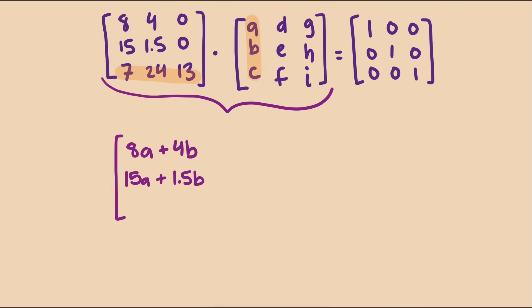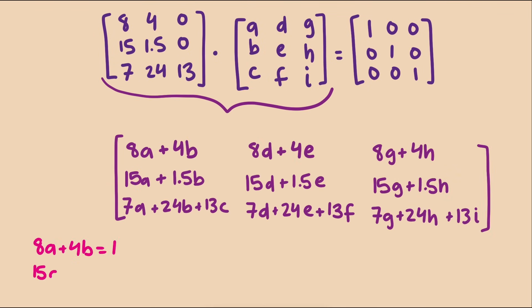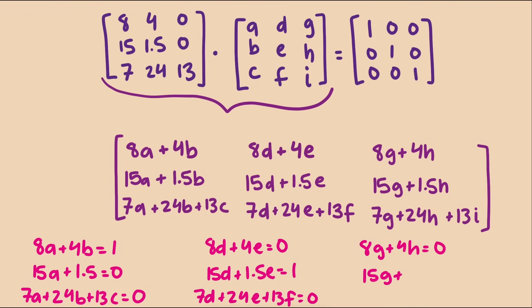Expanding out, we end up with three systems of equations, each with three variables. That does not look fun. We could row reduce each system to find the unknowns if we wanted.